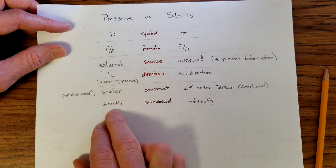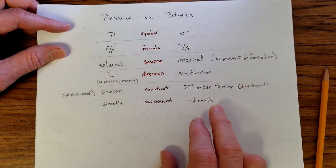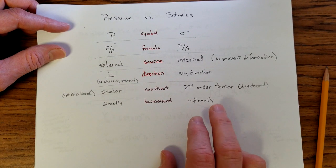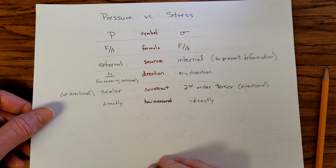And you can measure pressure directly, but I can't measure stress directly. I can measure force, find the area, and calculate it. But stress is found indirectly. Those are some of the differences between the two.